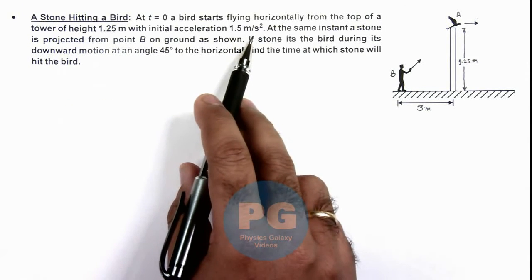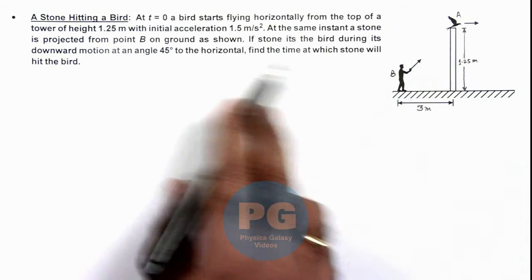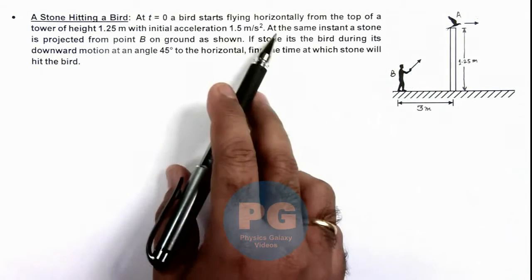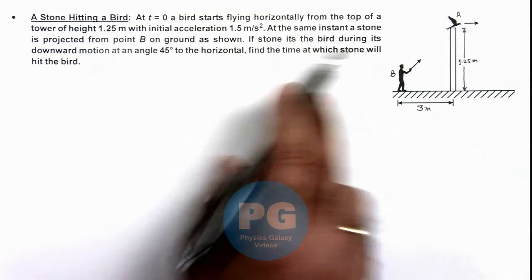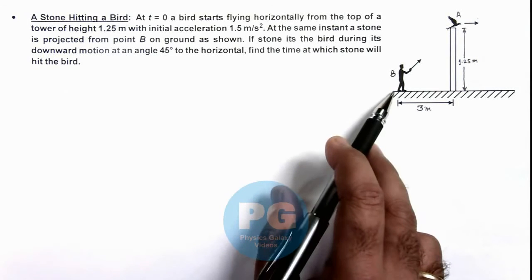With initial acceleration 1.5 meter per second square, we can see the situation in the figure. At the same instant, a stone is projected from point B on the ground as shown.